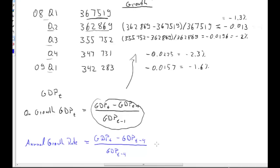So, let me now return to the calculation of the annual growth rate. Let's calculate the annual growth rate. Let's call it the annual growth of GDP at 09 Q1. So, what we need here is this value, the current GDP at that time, 342,283, minus the one 4 quarters prior, 367,519, and divided by the initial one, 367,519.